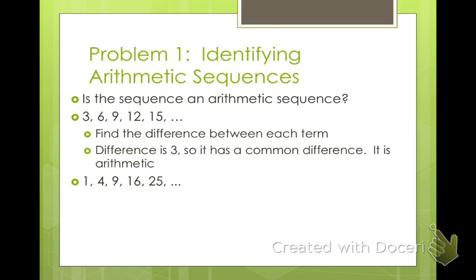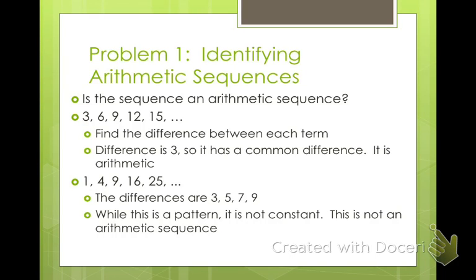This one. 1, 4, 9, 16, 25. Okay, so let's find the difference between each one. From 1 to 4 is 3. From 4 to 9 is 5. From 9 to 16 is 7. From 16 to 25 is 9. So we have a difference and it does make a pattern, but those numbers are not the same each time. So even though it's a pattern, it is not arithmetic.